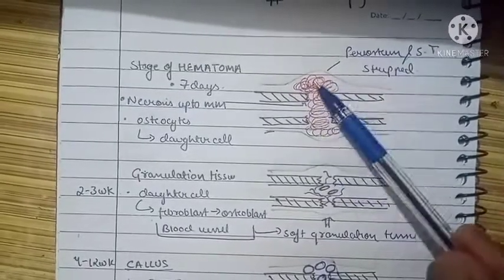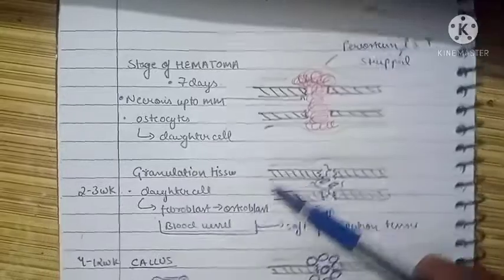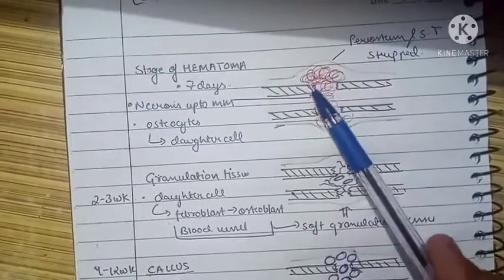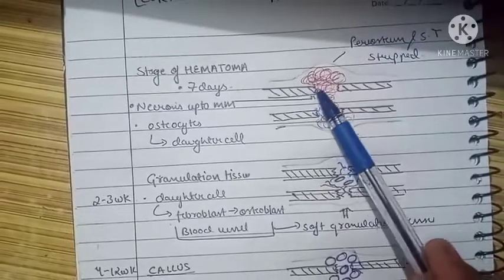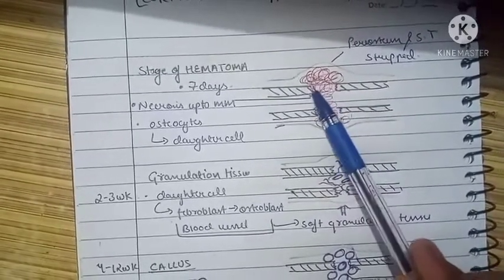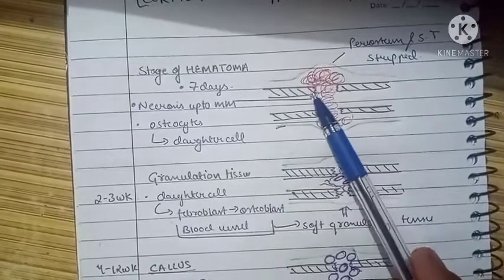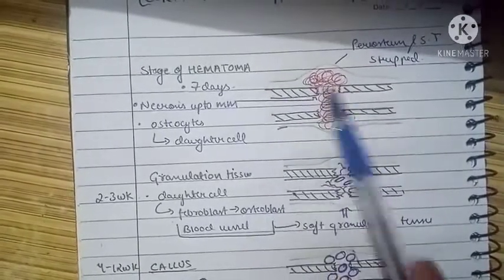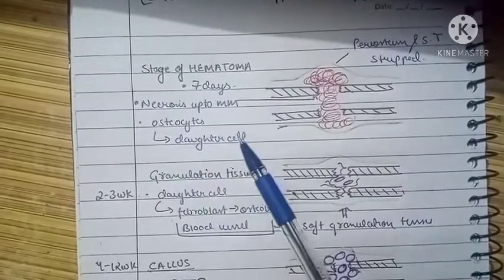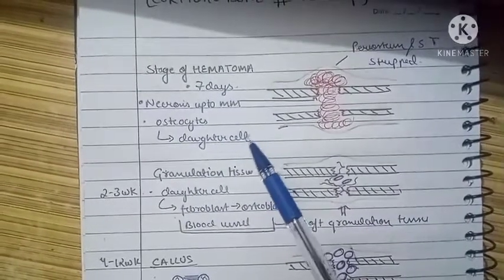This stage of hematoma lasts for seven days. Because of this blood, the blood supply to the margins of the fracture site is compromised, leading to necrosis up to a few millimeters. This also leads to stimulation of osteocytes that divide and form daughter cells. These daughter cells are going to help in the healing process.